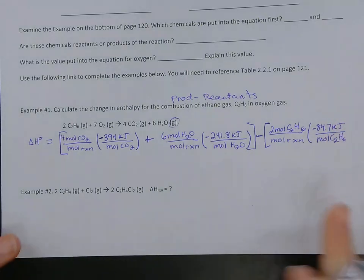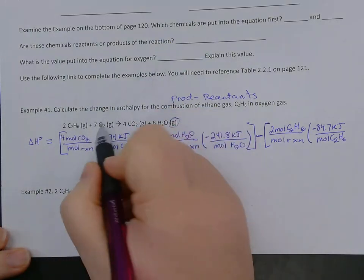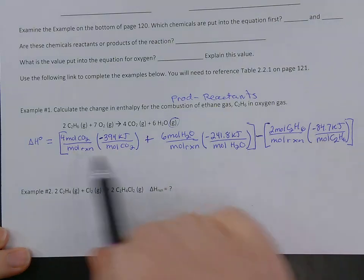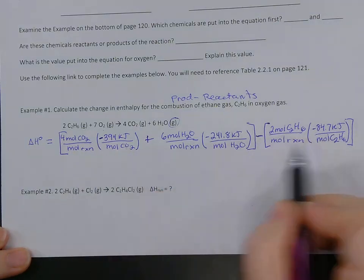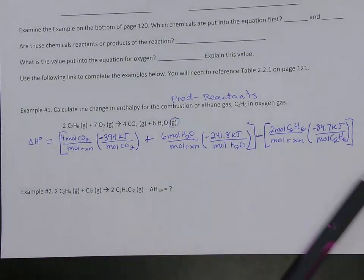And I'm actually going to stop there because my last chemical is oxygen. Oxygen has a value of zero. We don't even have to include it in our calculation here because it's going to be zero anyway. So this is our reaction. We've got products minus reactants. And so now we're just going to calculate.